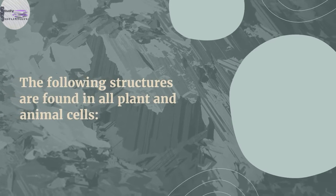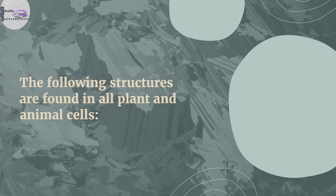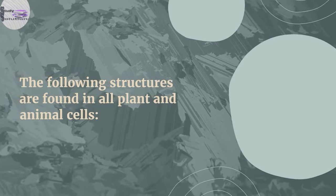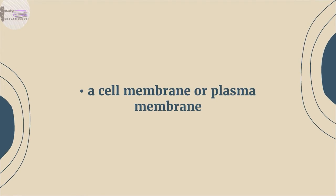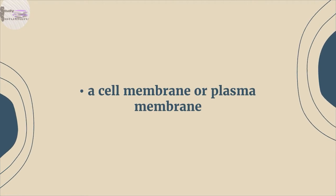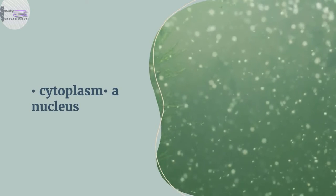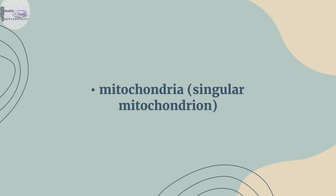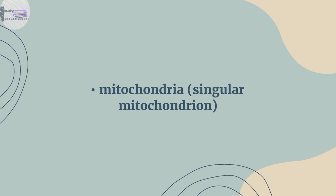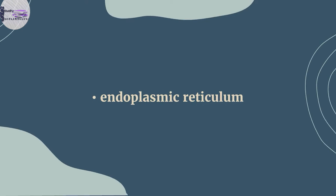A cell membrane or plasma membrane. Cytoplasm. A nucleus. Mitochondria. Endoplasmic reticulum. Ribosomes. In addition to the above, plant cells also possess a cell wall, chloroplasts, and a large vacuole.